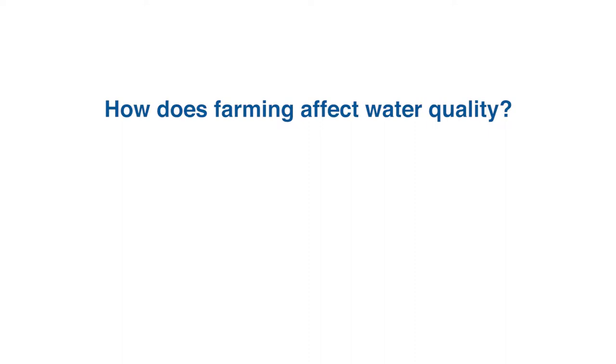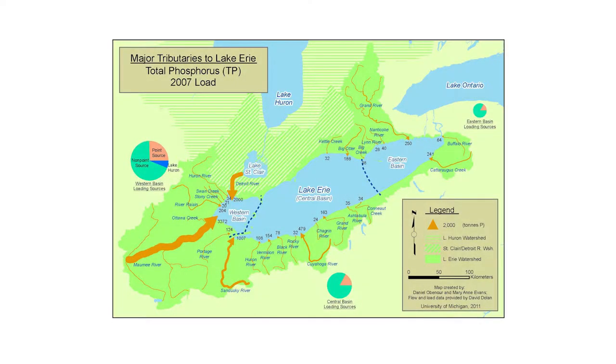A lot of our work is looking at how farming activities affect water quality downstream. Farming activities, while very beneficial for producing the products we need, can have negative consequences downstream. One of the main drivers of the size of the harmful algal bloom every year is the phosphorus load from the Maumee River, which feeds the algae. The algae in the Great Lakes love phosphorus, and that comes from fertilizers and manures in heavily agricultural watersheds.